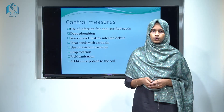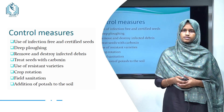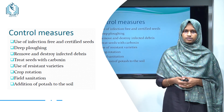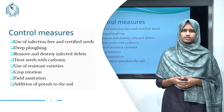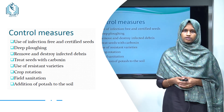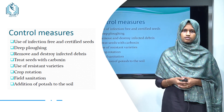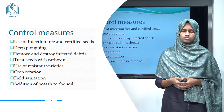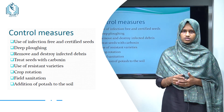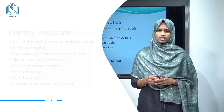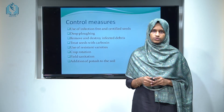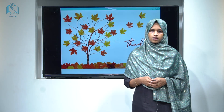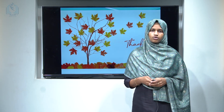Finally, we discuss the control measures. Some control measures include field sanitization, removing and destroying infected plant debris, crop rotation, deep ploughing, addition of potash to the soil, and treatment of seed with carboxin. I hope you got an idea about angular leaf spot of cotton.